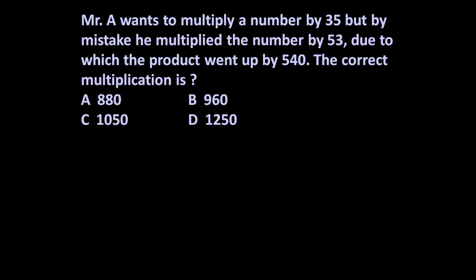So friends, he wants to multiply a number by 35, but by mistake he multiplied it by 53, due to which product went up by 540. So to solve such type of problem, first let us assume, let the number to be multiplied is x.